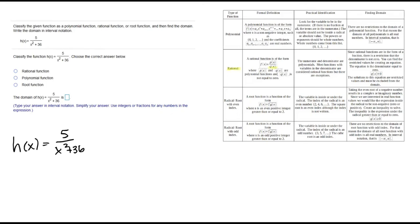Rational functions have a variable in the denominator. Radical and root functions have a square root or a cube root. We can see that we do have a variable in the denominator for this one, so I would classify this as a rational function.